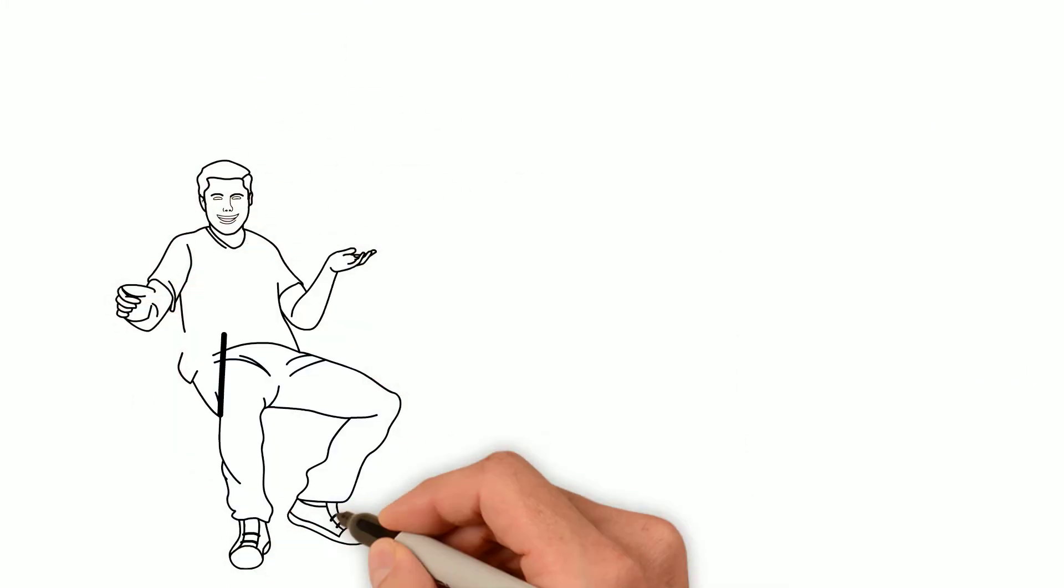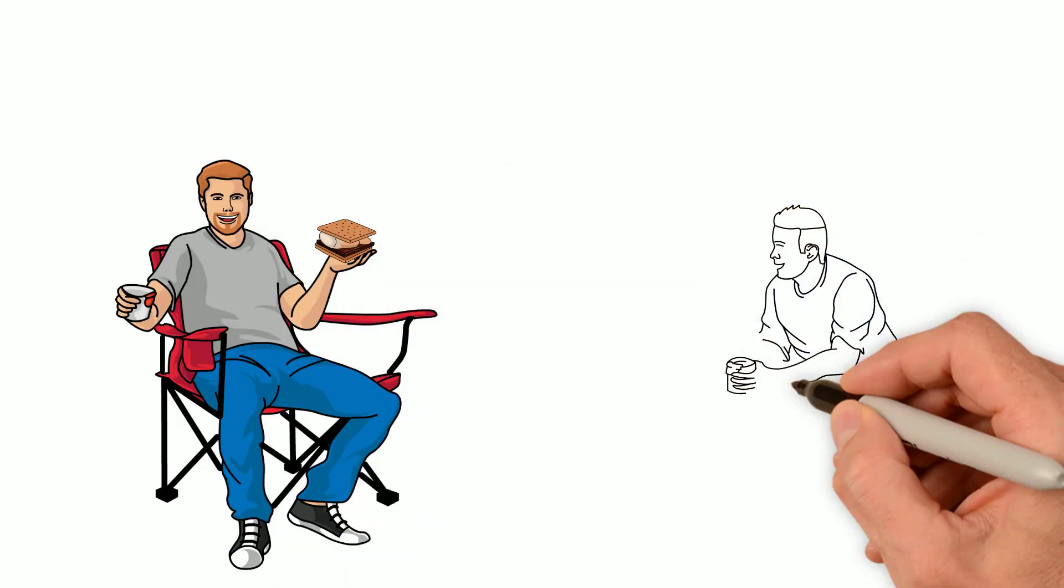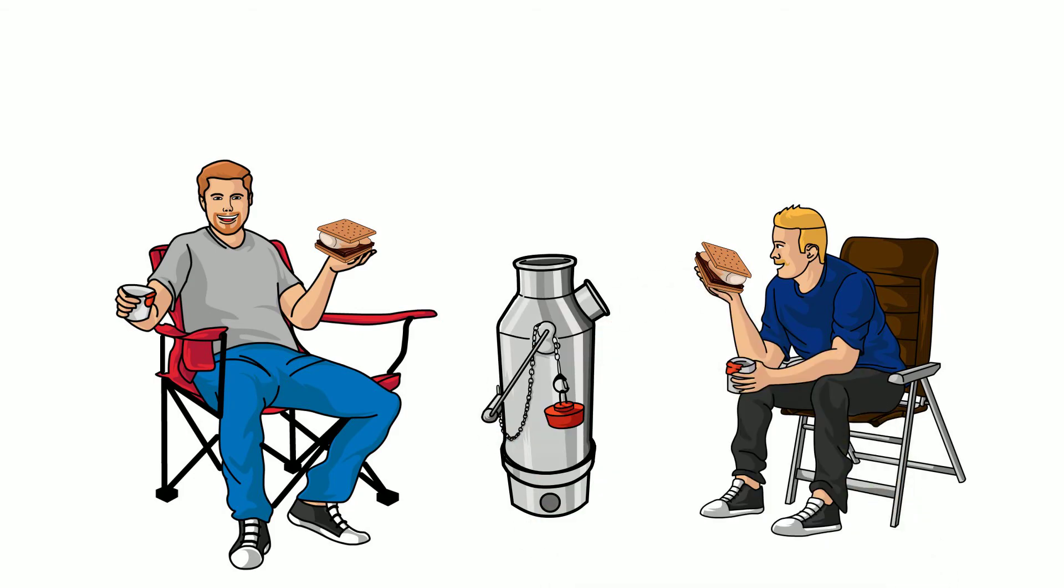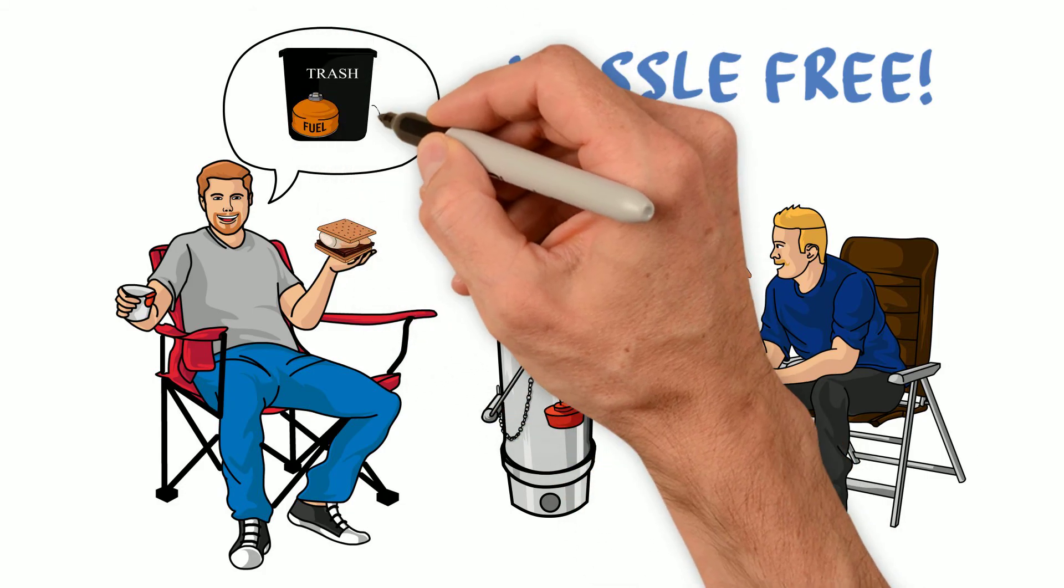Glenn sat contentedly eating his s'more, drinking hot chocolate and full from the delicious meal Rick had prepared, all with his Kelly kettle. That was about as hassle free as it gets, said Glenn. And no fuel canisters to throw in the trash.